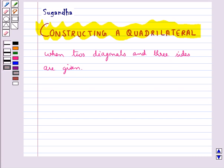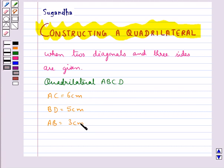Let us try to construct a quadrilateral ABCD where we are given AC equal to 6 cm, BD equal to 5 cm, AB equal to 3 cm, BC equal to 4 cm, and CD equal to 3.5 cm.